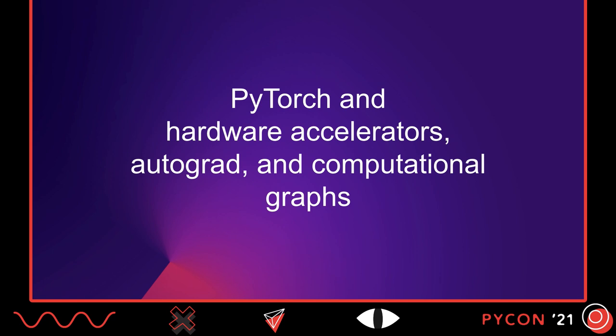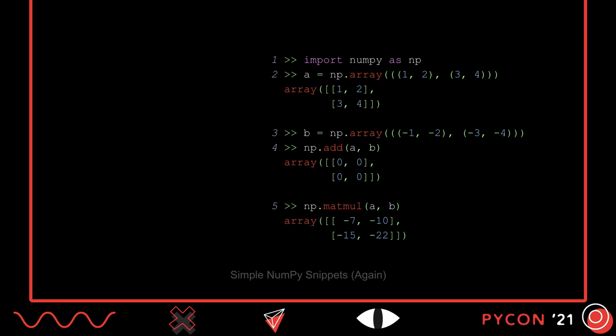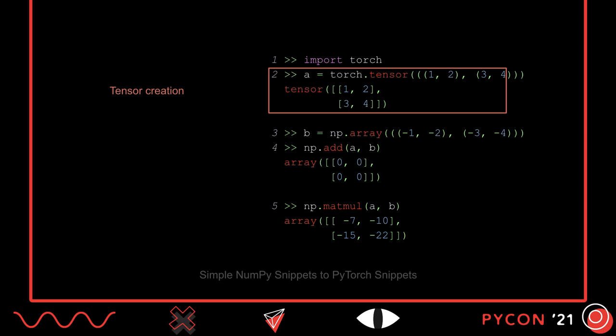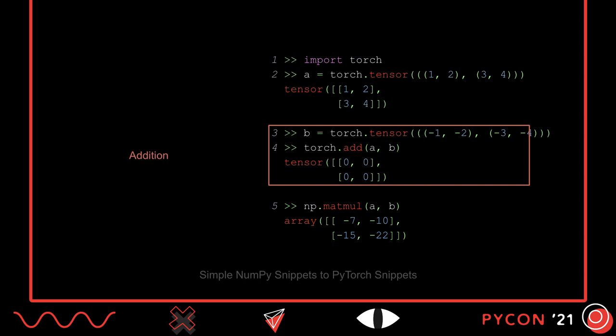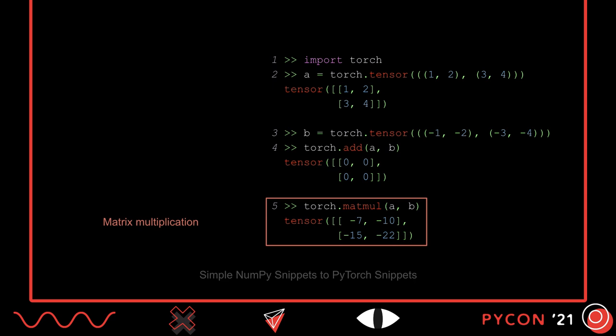Now that we've had an extremely brief tour of NumPy as a Python package with tensor operations written in both Python and C++, let's switch over to PyTorch and expand our discussion to include hardware accelerators, autograd, and computational graphs. Like NumPy, PyTorch is also a popular Python package for operating on tensors, and its user interface is extremely similar to NumPy's. Let's see that by translating our simple NumPy program to PyTorch. In the first snippet, we just need to swap the word array for tensor. In the second snippet, nothing changes except we're now using the Torch namespace. And the same is true in the third snippet. So here's our simple PyTorch program — a drop-in replacement for the original NumPy program.